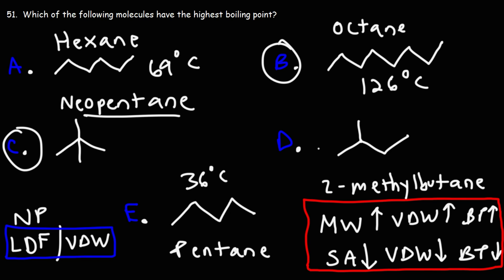Now looking at answer choice C, D, and E, these are all five carbon chains. 2-methylbutane has a boiling point of about 28 degrees Celsius. As you can see, it's lower than pentane due to the branching. Neopentane has the lowest of the boiling points here. It's about 10 degrees Celsius.